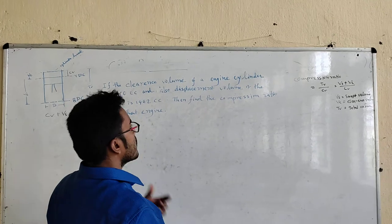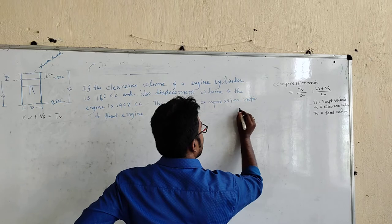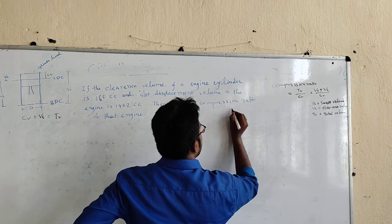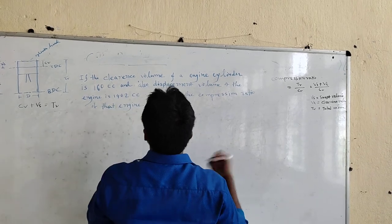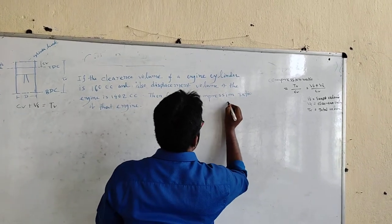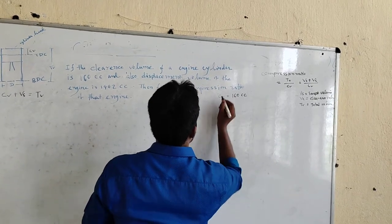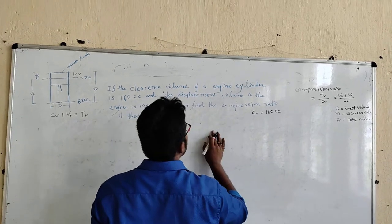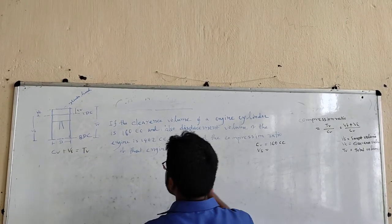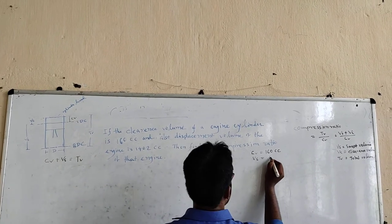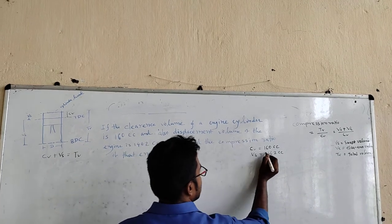The given data: VC, the clearance volume, is 160 cc, and VS is equal to 1462 cc.